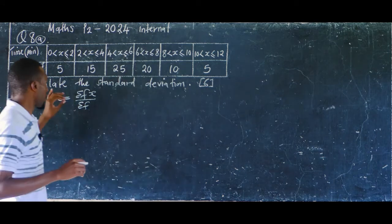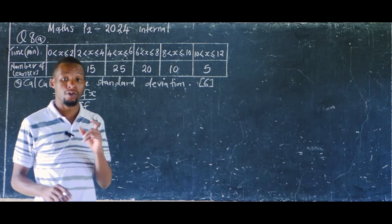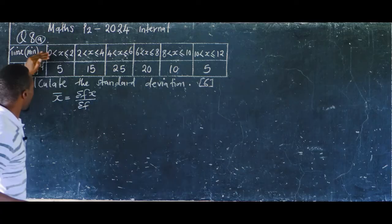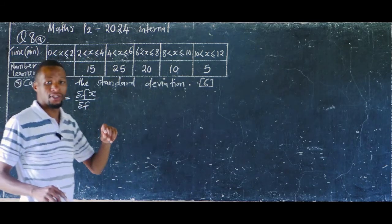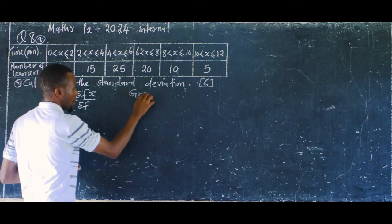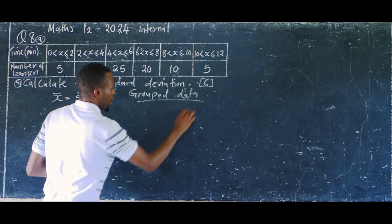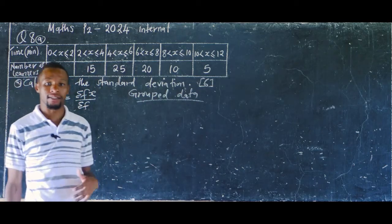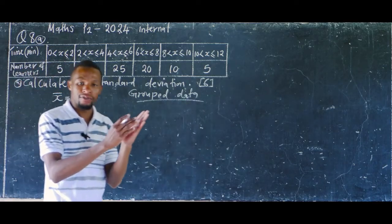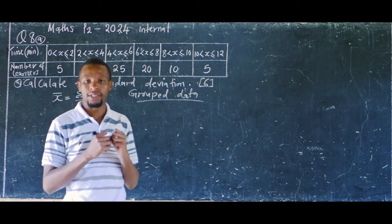It's very important for you to identify your values for x and also the values for frequency. This type of data is what we call grouped data — data that is in groups or in classes, as you can see from zero to two. There are numbers zero, one, and two, so they are grouped.